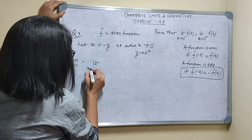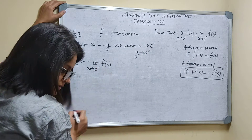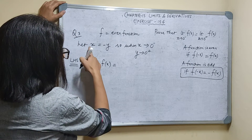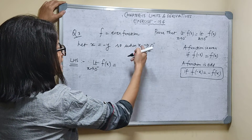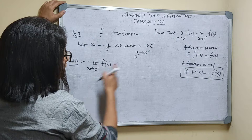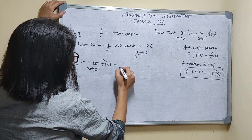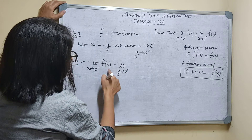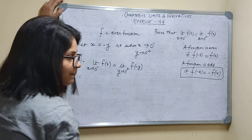We have to prove: limit as x tends to 0 minus of f(x). I am letting x = minus y. So when x tends to 0 minus, y tends to 0 plus. Now I have to change the limit: x tends to 0 minus becomes limit y tends to 0 plus, and f(x) becomes f(minus y).